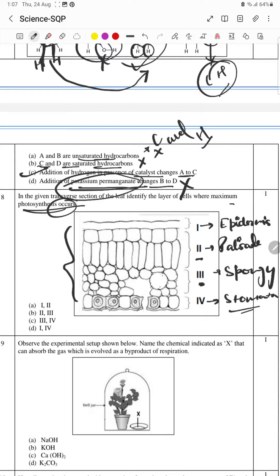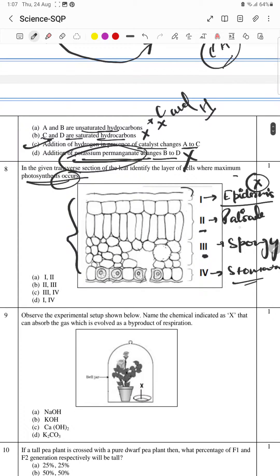So here in epidermis, no chloroplast is present. It has a waxy coating. Now palisade, here chlorophyll is present, and in spongy also chlorophyll is present.